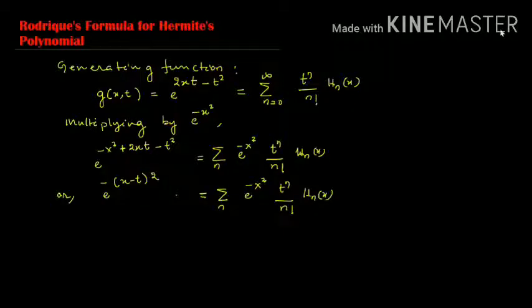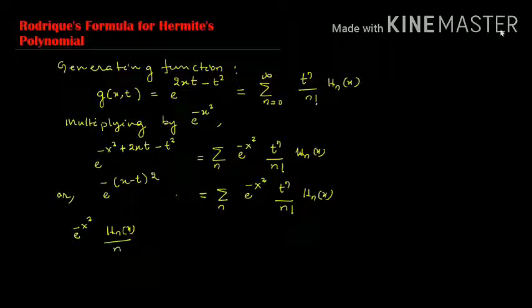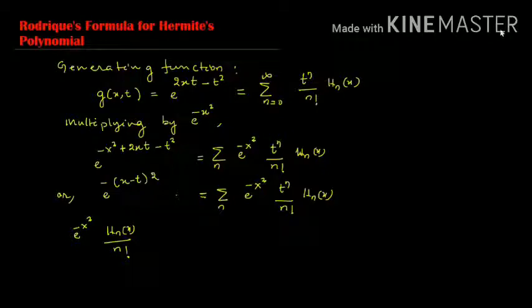Now, the right-hand side shows that e^(-x²) times Hn(x) divided by n! is the coefficient of t^n. So this equals the coefficient of t^n in the expansion.